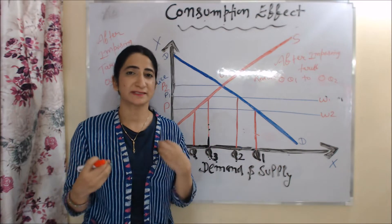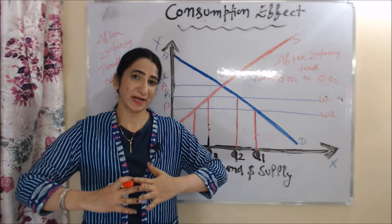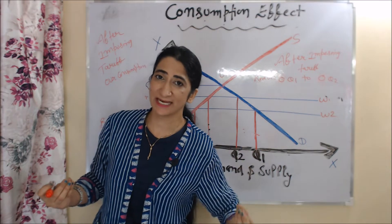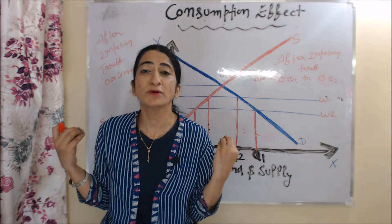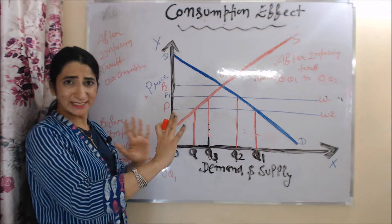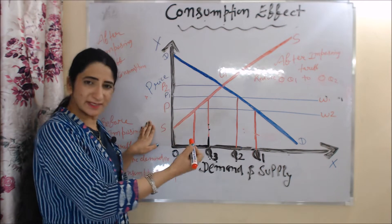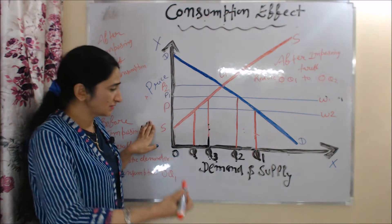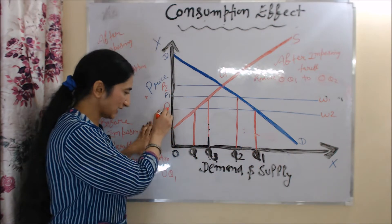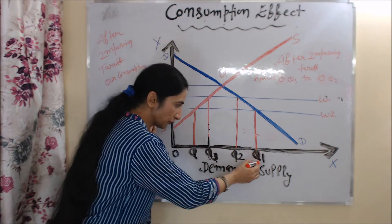Now we will talk about the consumption effect. The consumption effect basically shows that after imposing tariff, our consumption falls because the price of goods increases. Before imposing any tariff, our price was OP. At OP price, our domestic demand — or we can say our consumption — was OQ1.